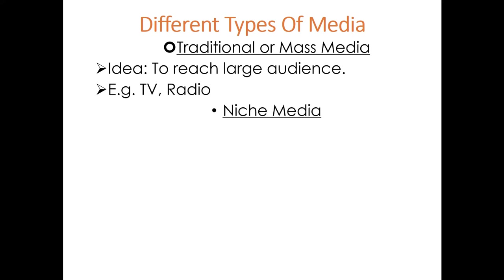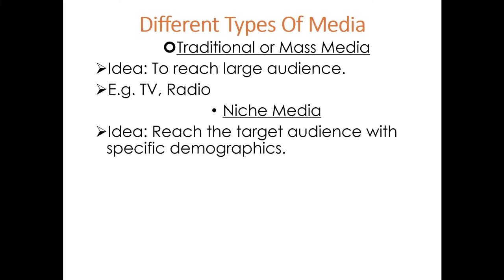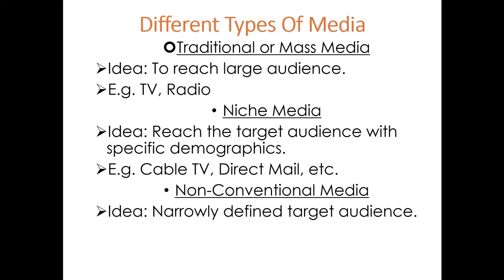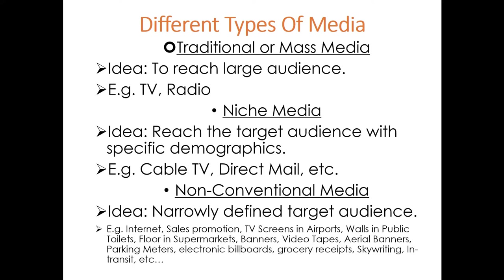There are different types of media. Traditional or mass media, such as radio and television, aims to reach large audiences. Niche media aims to reach a target audience with specific demographics — for example, cable TV targets those who can afford to pay, and direct mail is another example. Non-conventional media targets narrowly defined audiences, such as the internet, sales promotions, TV screens in airports, or advertisements in public spaces.